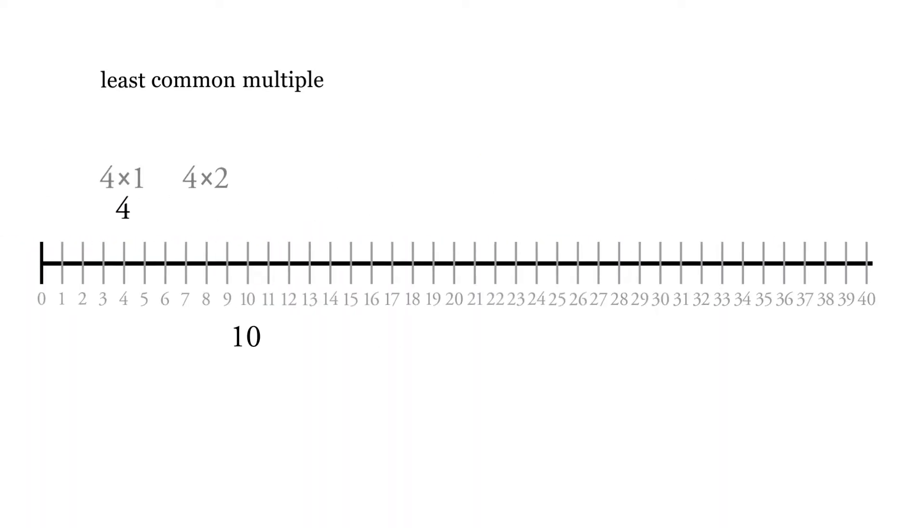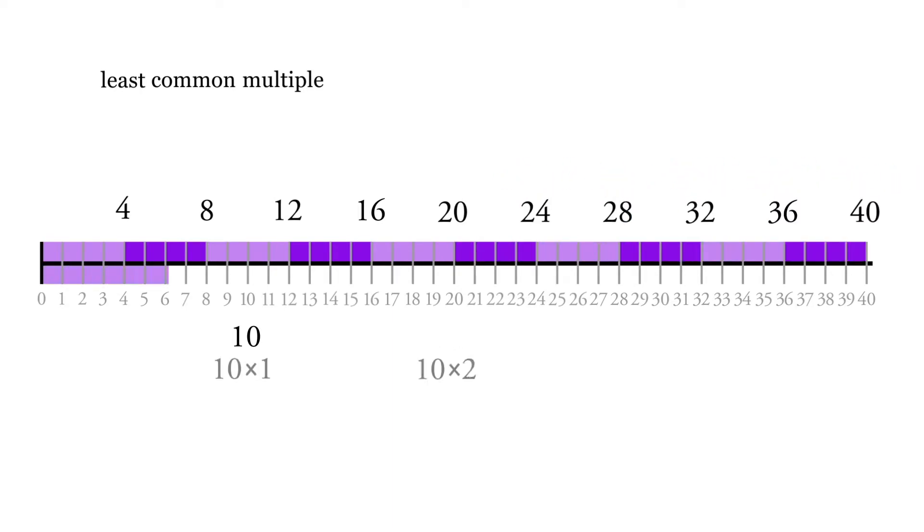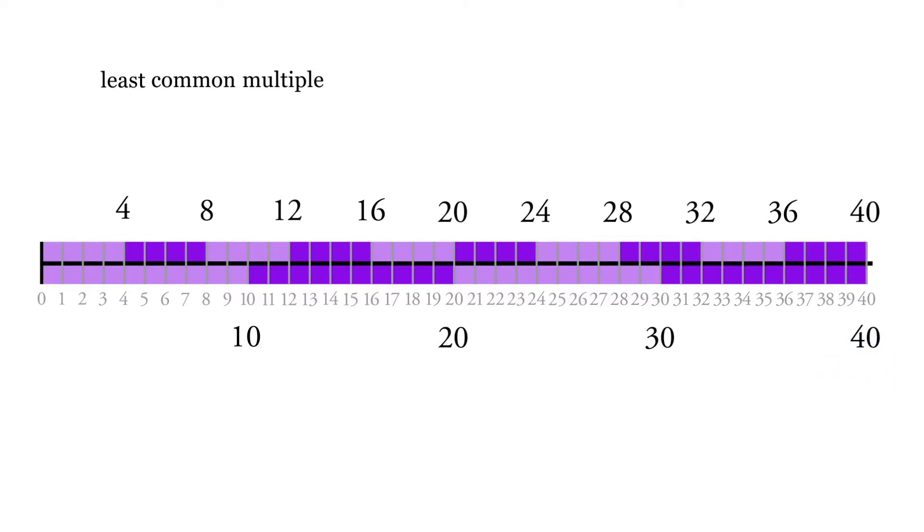If we look at, for instance, 4 and 10, we can do 4, 8, 12, 16, 20, 24, 28 and so forth. And we can go 10, 20, 30, and we see that the least common multiple here is 20. Now, 4 times 10 is 40 and that is a common multiple, but our least common multiple is 20. So in this case, our least common multiple is lower than just simply multiplying 4 times 10.